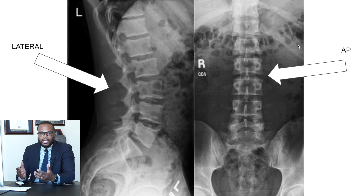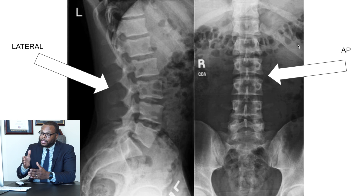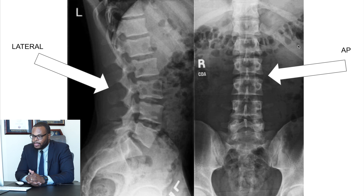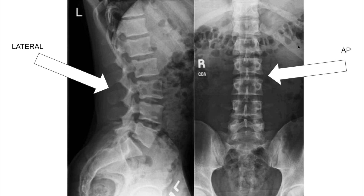Normally, the x-rays that we get are what's called AP and lateral. AP means the direction of the beam that is shot to take the x-ray, and lateral means looking at it from the side. These are pretty standard x-rays — lateral of the lumbar spine, AP of the lumbar spine. The first thing that I look at is usually fractures, if there's any slippage of the vertebrae, if there's a lot of arthritis, or if something is abnormal like scoliosis. I'm going to show you some case examples of those.